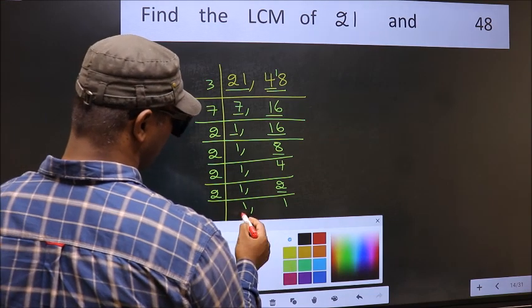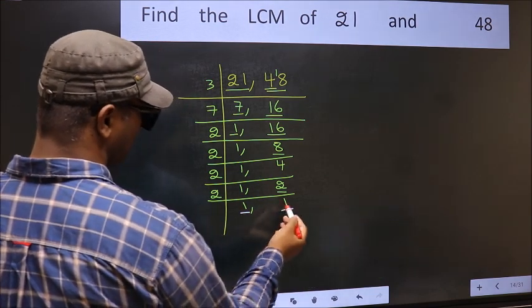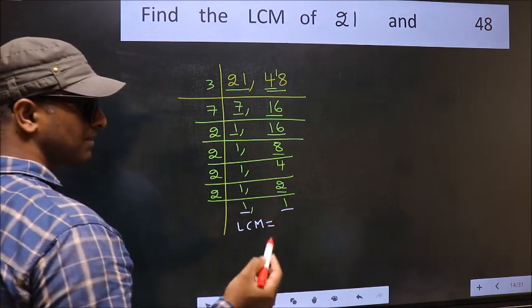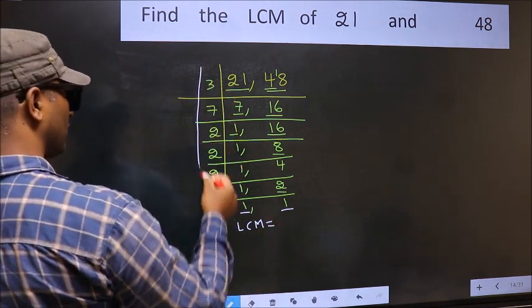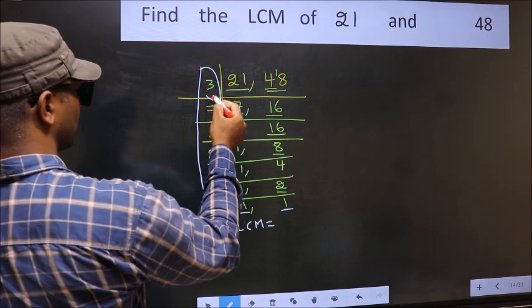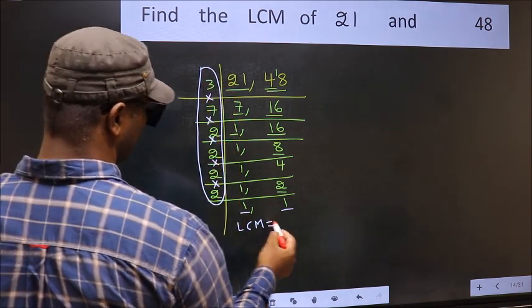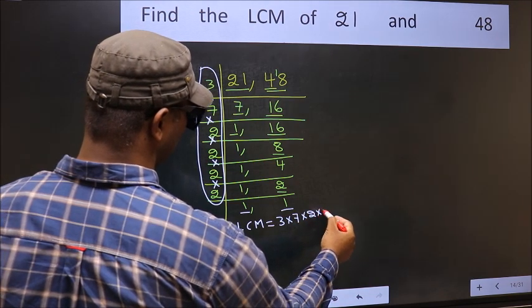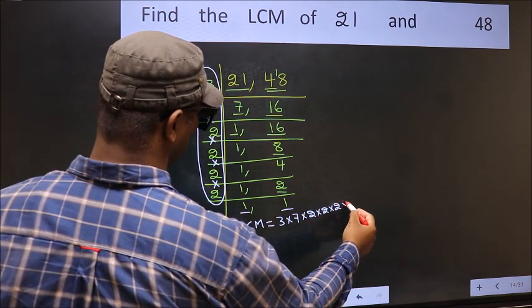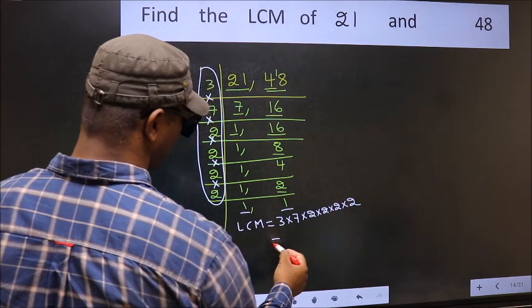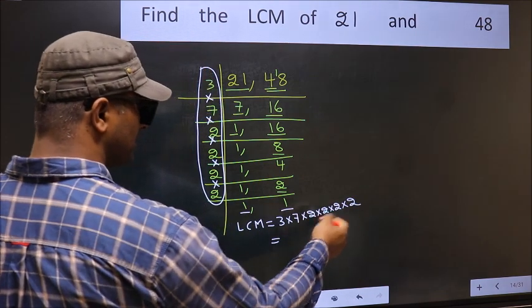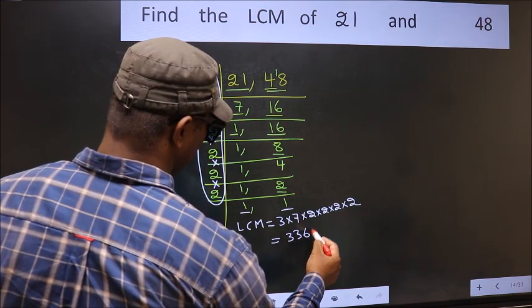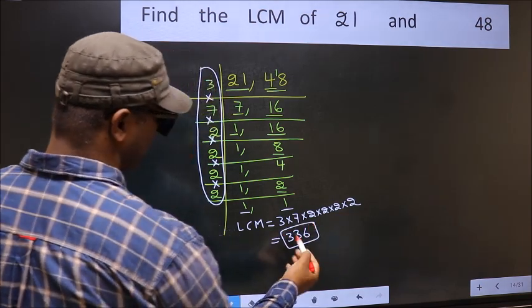We got 1 in both places. So the LCM is the product of these numbers: 3 times 7 times 2 times 2 times 2 times 2 times 2. When we multiply these numbers we get 336. So 336 is our LCM.